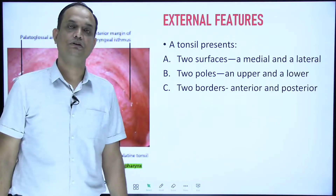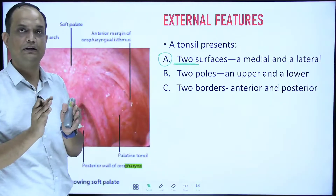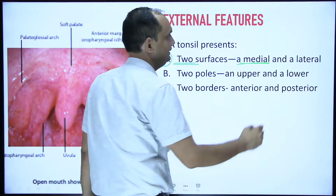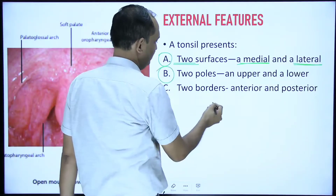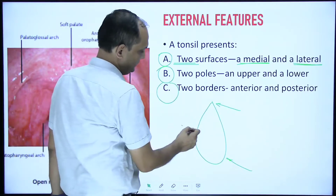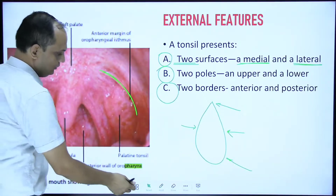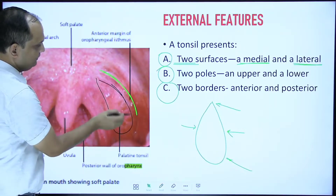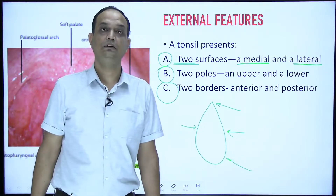What are the external features of the tonsil? The palatine tonsil has two surfaces: one facing the oropharynx (the medial surface) and one attached to the pharyngeal wall (the lateral surface). It also has two poles — upper pole and lower pole — and two borders: an anterior border facing the anterior pillar, and a posterior border facing the posterior pillar.